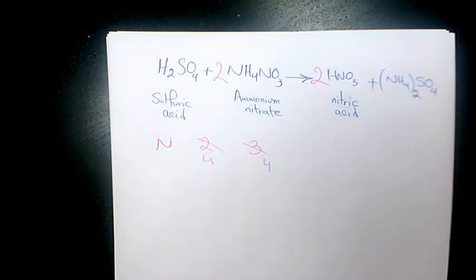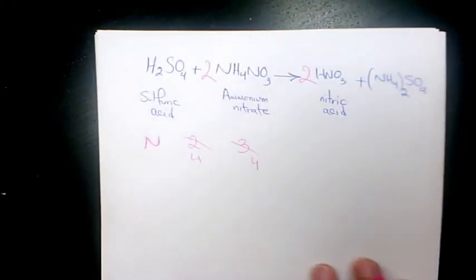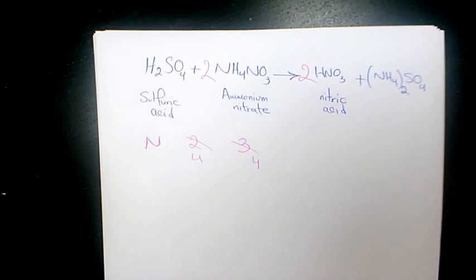So basically now the reaction is balanced. For one mole of sulfuric acid we need 2 moles of ammonium nitrate in order to have stoichiometric relation.